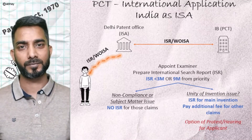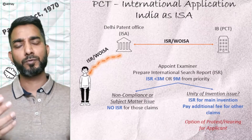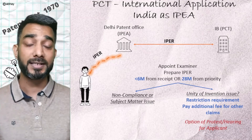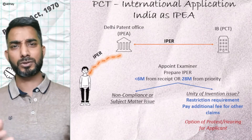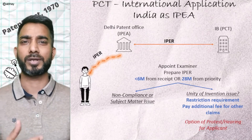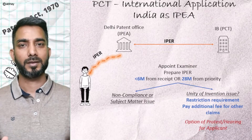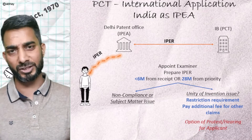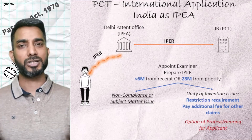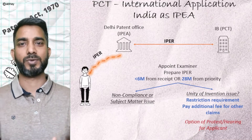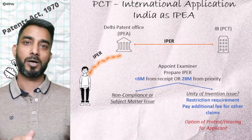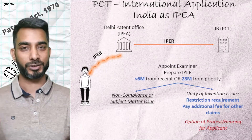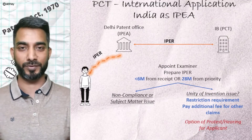The Delhi Patent Office can also act as IPEA. An examiner is appointed to carry out the examination through the usual examination process, and an examination report is generated which is then shared with IB as well as the applicant. This covers the international application process where India acts as receiving office, searching authority, or examining authority.